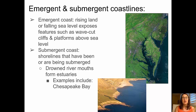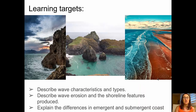We're ready to review our learning targets: we described wave characteristics and types, we described erosion and shoreline features that are produced, and we talked about the differences between emergent and submergent coasts. Go ahead and take your mastery check quiz, and I'll see you in class.